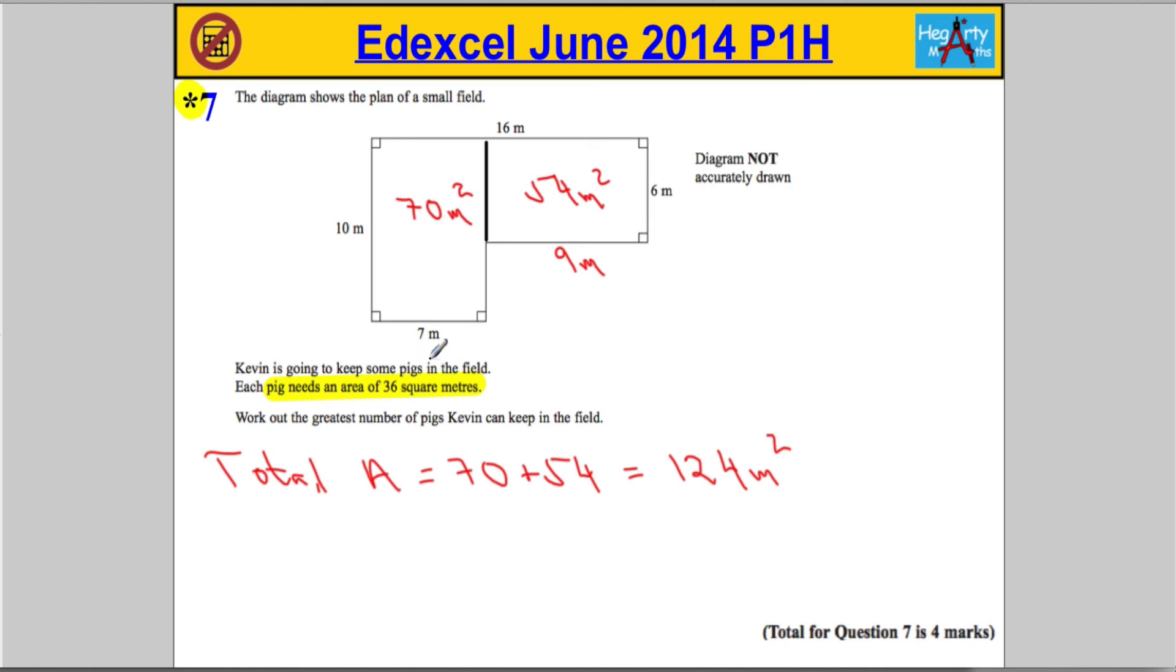Okay, each pig needs 36 metres squared. There's many ways to approach this. Essentially what I would do is divide, but I'm going to do it by counting up. So 1 pig needs 36 metres squared—I'm going to write 1 pig equals 36. 2 pigs is going to be double that, so 36 and 36, 72 metres squared.